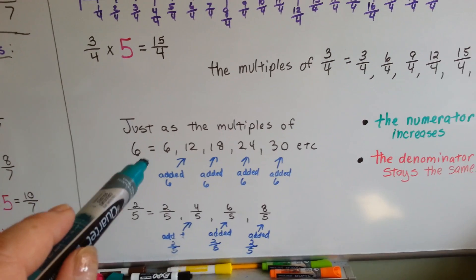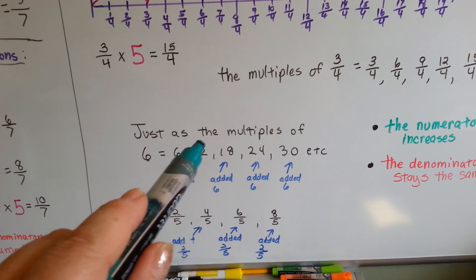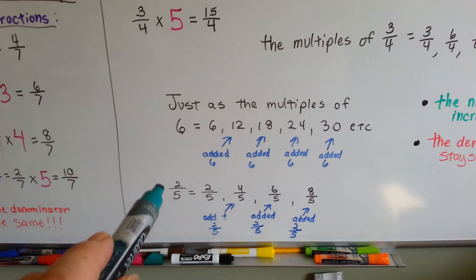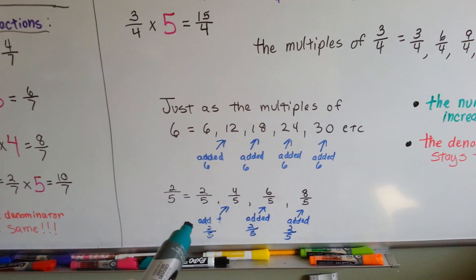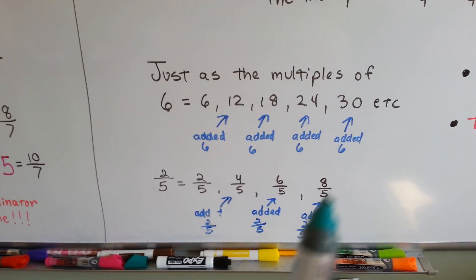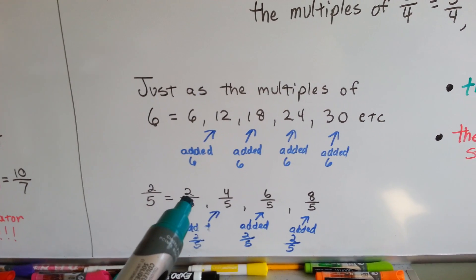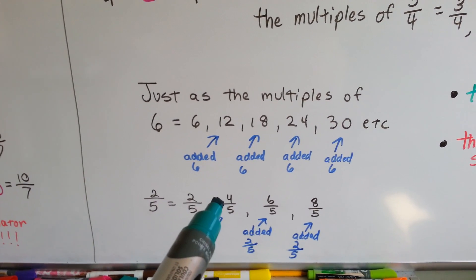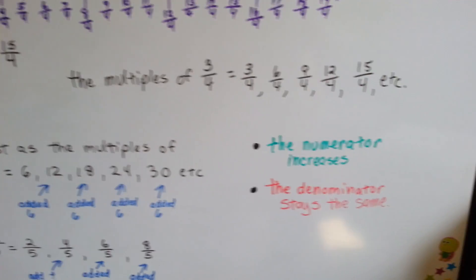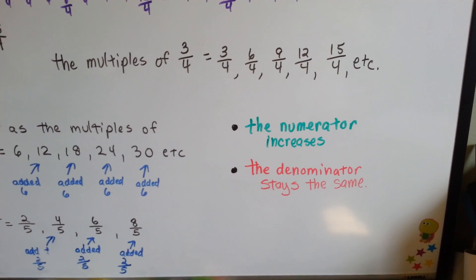Just as the multiples of 6 are 6, 12, 18, 24, and 30, and so on, 6 is added each time we move to the next multiple. Same thing with fractions. The multiples of 2 fifths, we're going to add 2 fifths each time to get the next multiple. For 6, we added 6. For 2 fifths, we add 2 fifths. 2 fifths and 2 fifths is 4 fifths. 4 fifths and 2 fifths is 6 fifths. 6 fifths and 2 fifths is 8 fifths. Remember, the numerator increases as a regular multiple will, and the denominator will stay the same.